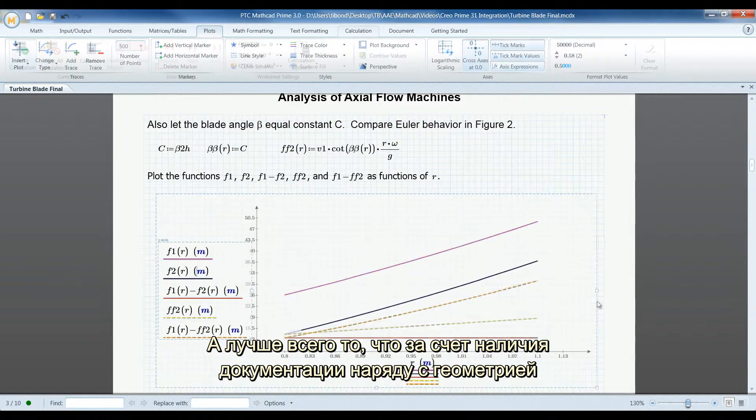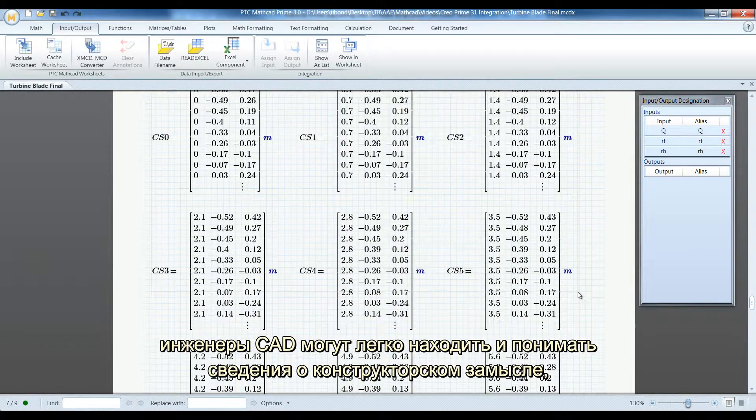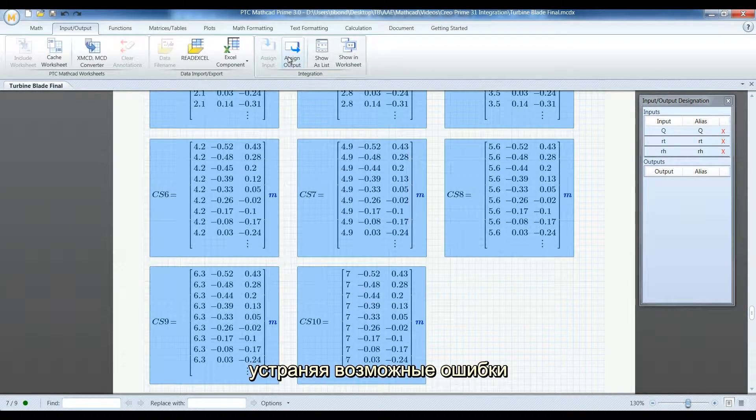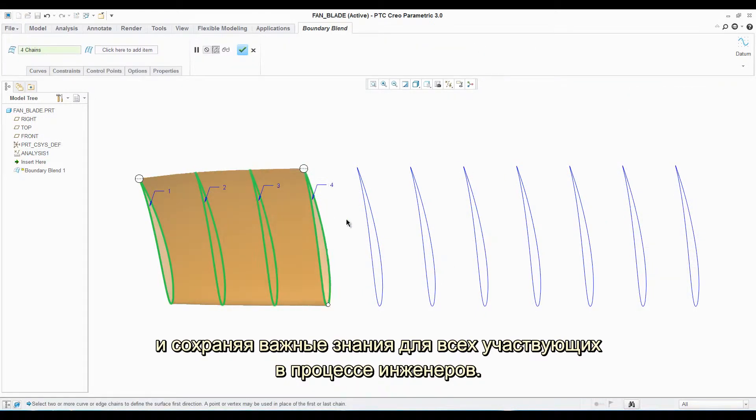Best of all, by having the documentation available with the geometry, CAD engineers can easily find and understand the details of the design intent, eliminating potential design errors while preserving essential knowledge for all engineers involved in the process.